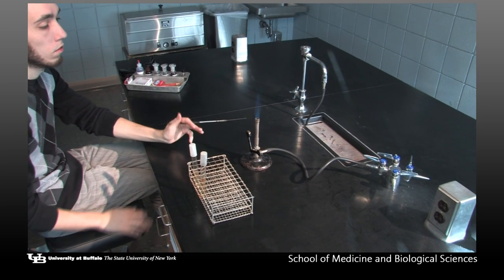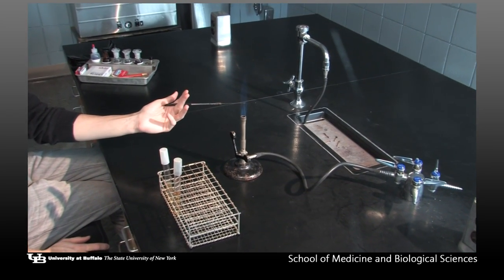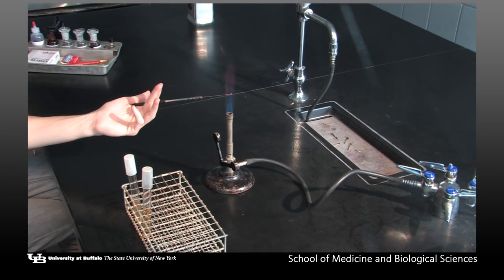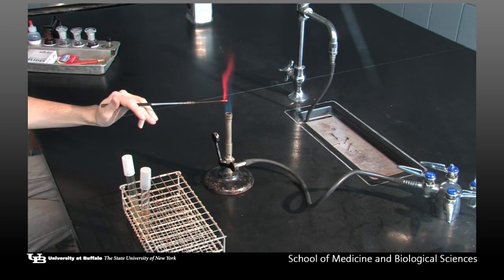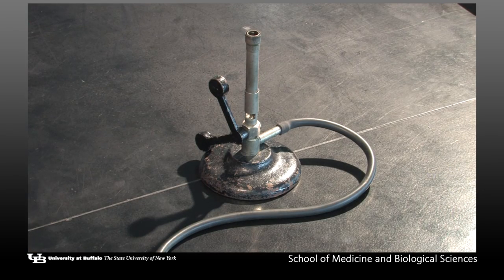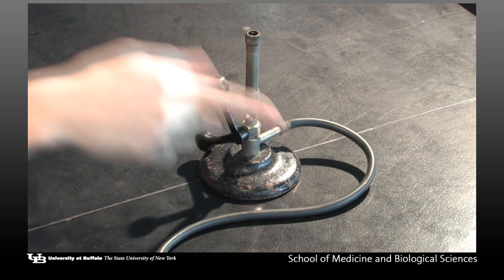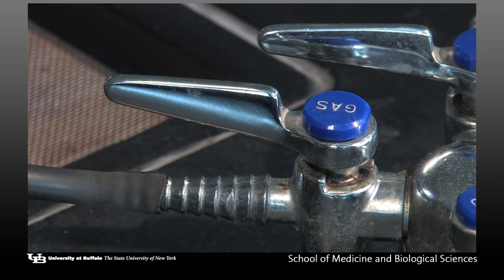A Bunsen burner is a common piece of laboratory equipment that produces a single open gas flame. The design of a Bunsen burner includes a vertical metal tube connected to a weighted base. The base includes a nozzle with rubber tubing attached which connects to the natural gas source on the lab bench.